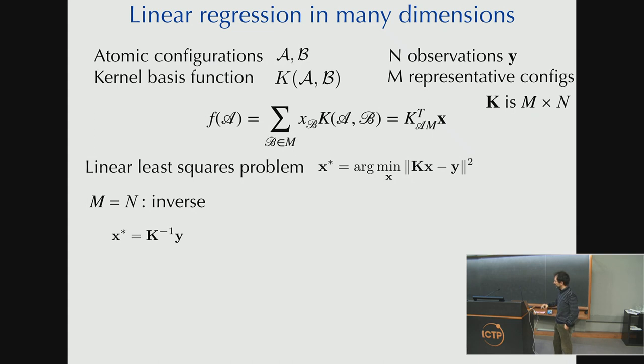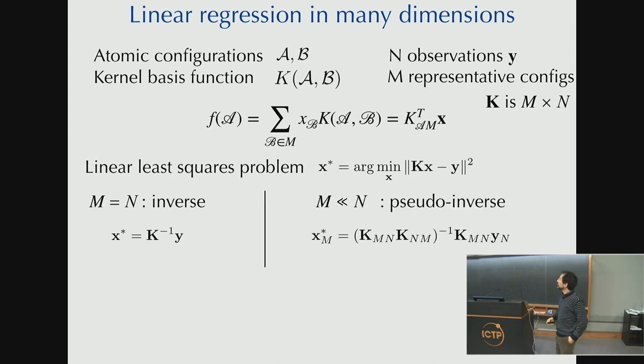If you actually implemented that, it turns out that it's very unstable, but it has an analytic answer, right? So if M is equal to N, if I use all of my representations as, all of my observations as induced in representative configurations, then all I have to do is invert this K, and that's my X. Typically, we don't want to do that. There are too many observations, and we don't need all of them to induce basis functions.